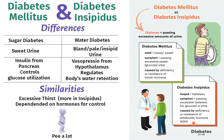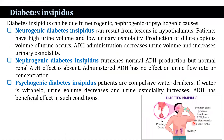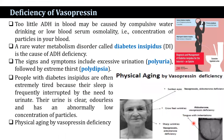ADH is ultimately secreted from the neurohypophysis portion of the pituitary. Physical aging is also associated with vasopressin. Symptoms include sunken eyes, crow's feet, and wrinkles. Vasopressin and aldosterone deficiency can occur together with different types of identifications shown on the tongue due to vasopressin deficiency.